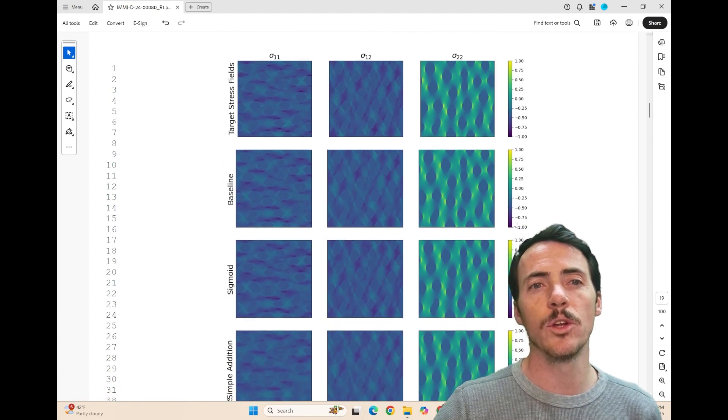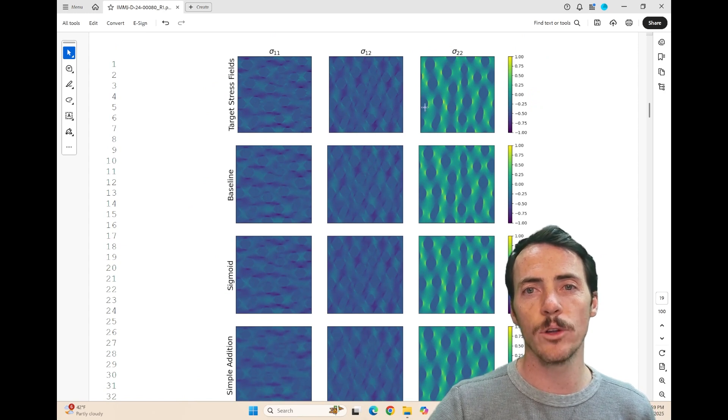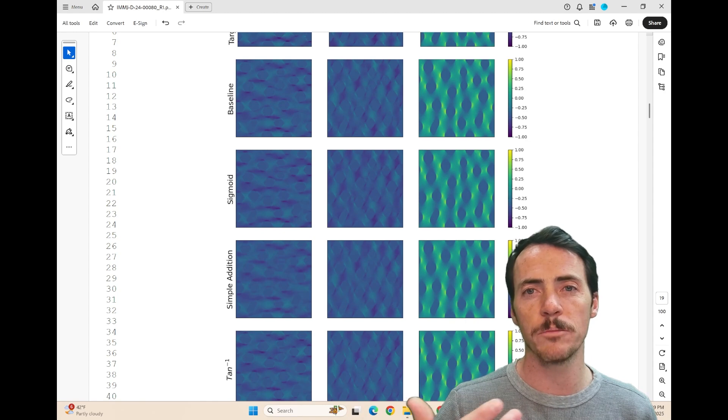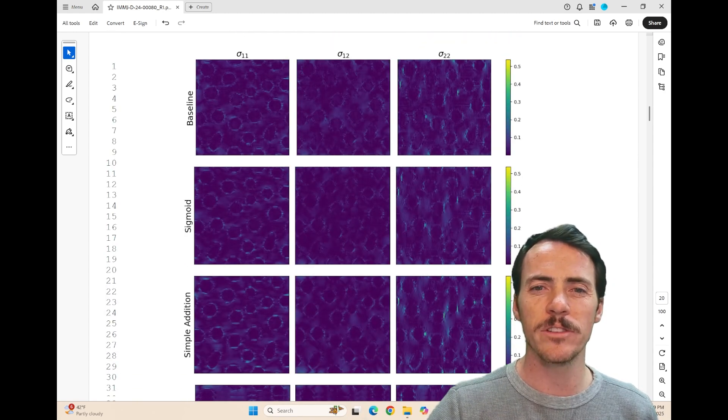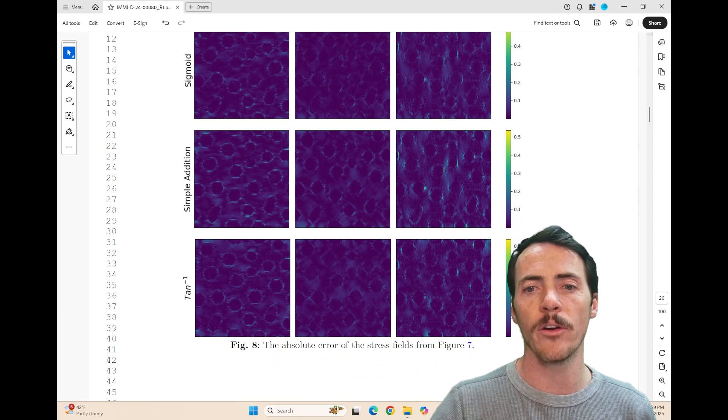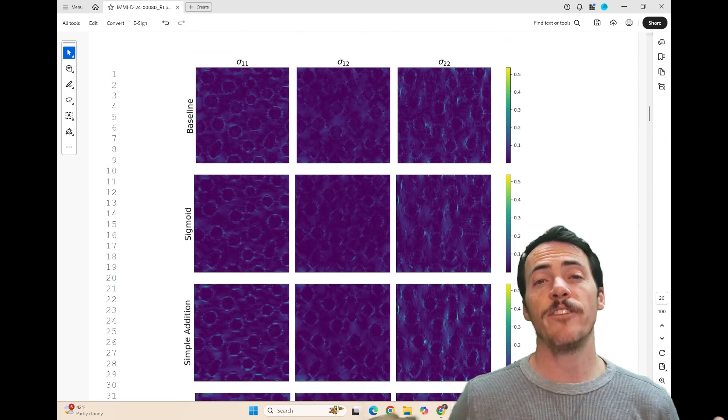You can see that when you actually look at what the target stress fields were for these ones, and what the baseline, sigmoid, simple addition, and inverse tangent were able to put out. Maybe it's a little bit easier to see if you actually compare where the errors were showing up here. This is the absolute error of these stress fields from these different models.